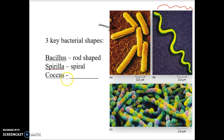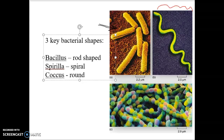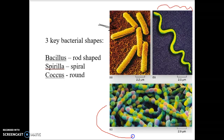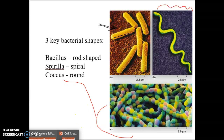Our third bacterial type is called coccus. Coccus bacteria are round-shaped — they look like little balls. They can string together to form chains, but each individual bacterial cell functions on its own and does everything it needs to by itself.